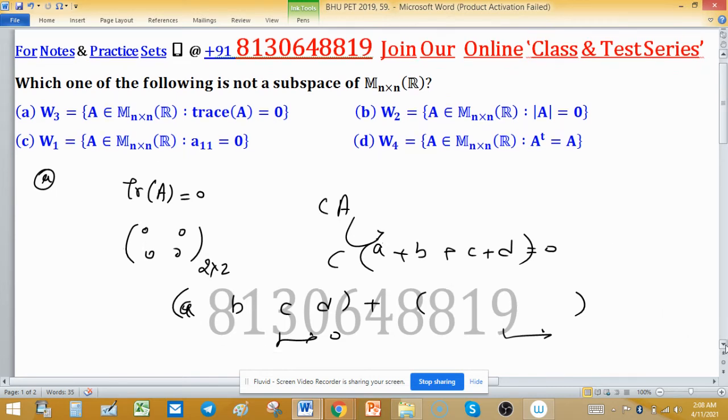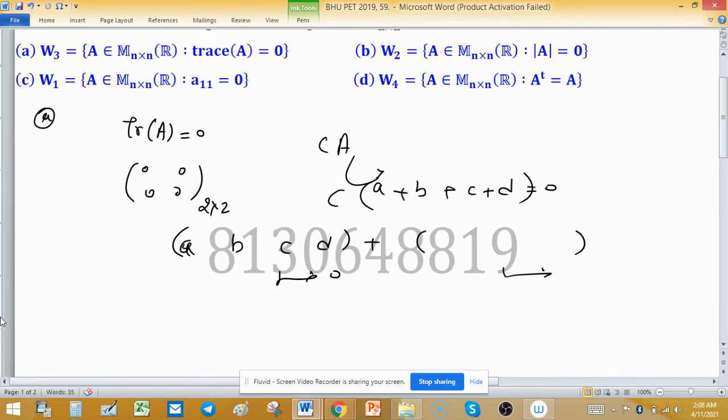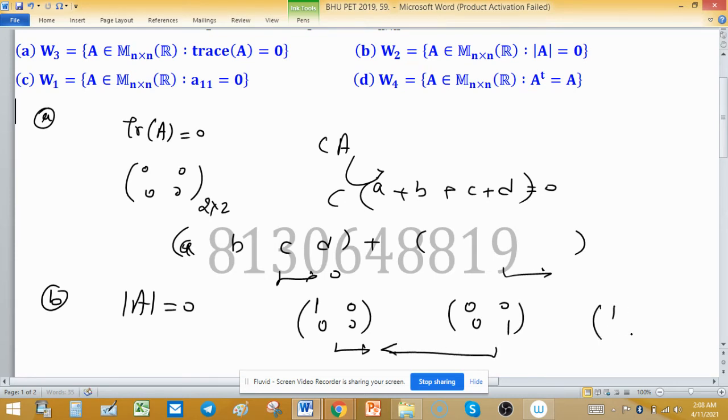Now come to option B. In option B, determinant of A is zero. The zero matrix is there—no problem. If we are taking two elements: matrix (1,0; 0,0) has determinant zero, and matrix (0,0; 0,1) also has determinant zero. But their sum is the identity matrix of order 2.